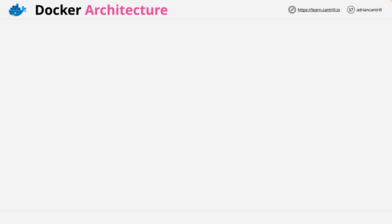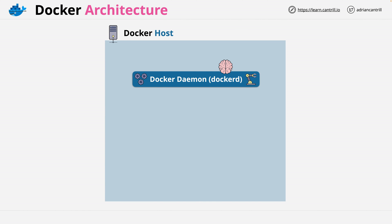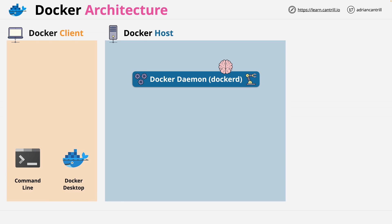When you hear the term Docker or Docker Engine, think about a client-server application. We start with a Docker host, and it's a Docker host because it's running the Docker daemon. This is the part which does the heavy lifting — it's the brains of the Docker platform. This is the server part of the Docker engine client-server architecture. The Docker daemon is a long-running service, and it provides API access to be able to interact with it.